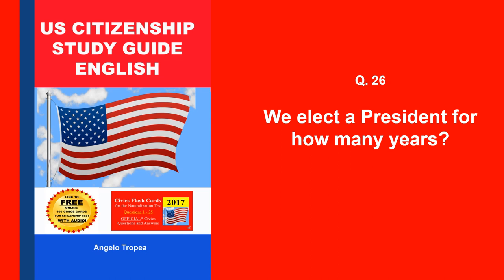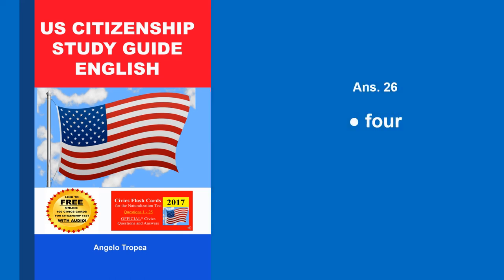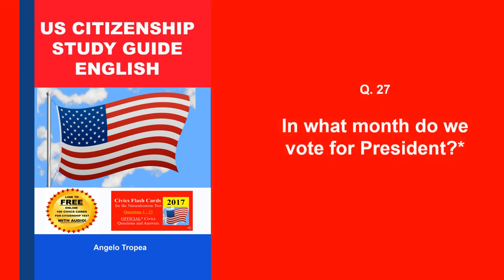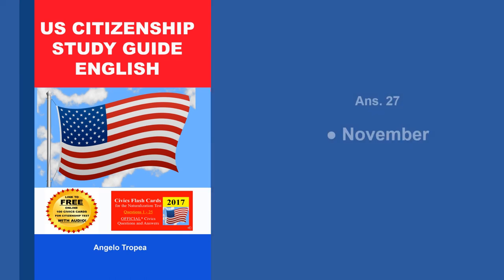We elect a president for how many years? Four. In what month do we vote for president? November.